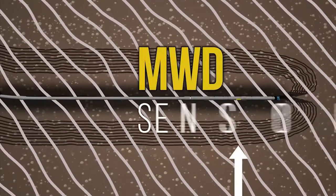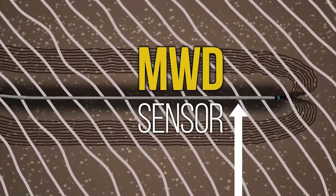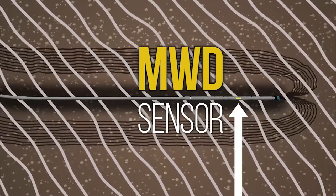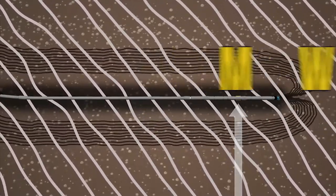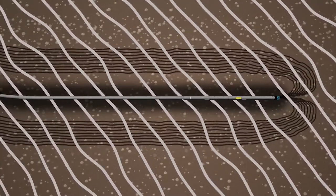What does it do? Drill string interference, depending on orientation, can pull and stretch the Earth's magnetic field. This leads to measurement error, which ultimately leads to error in wellbore position.